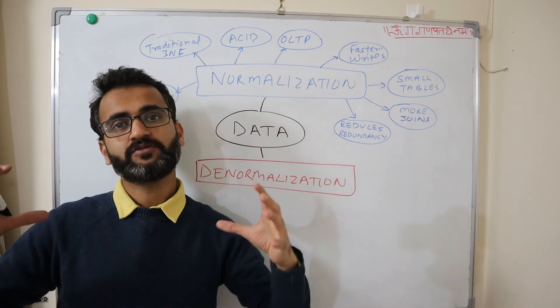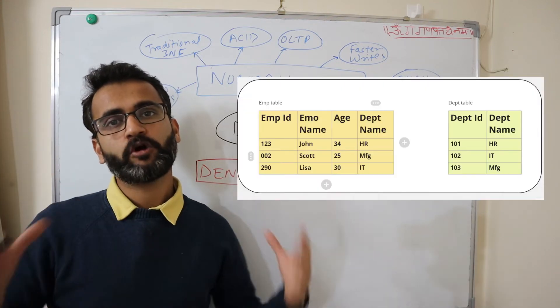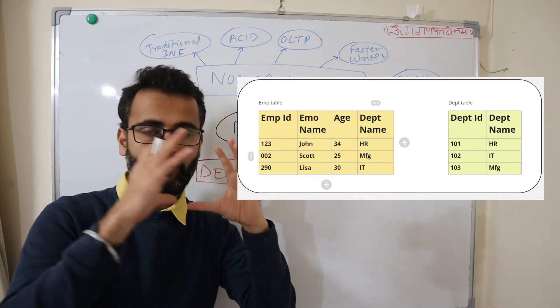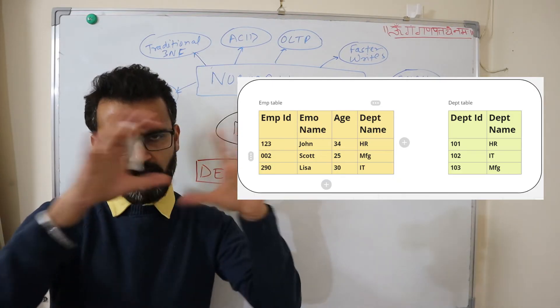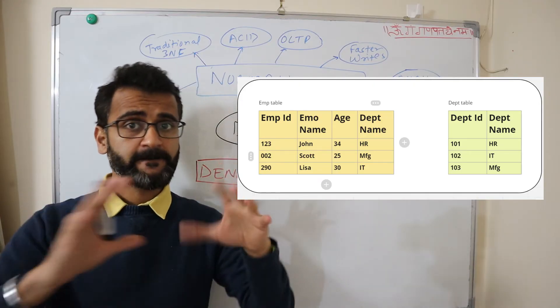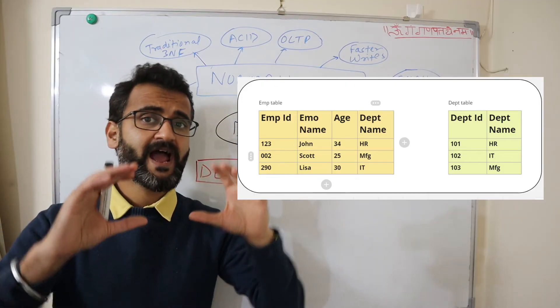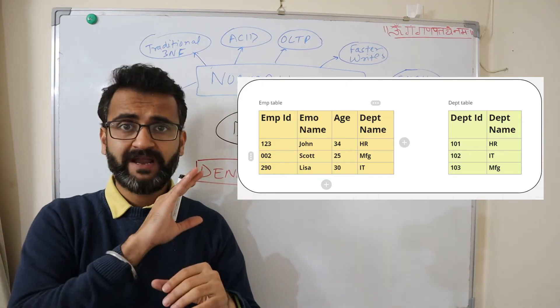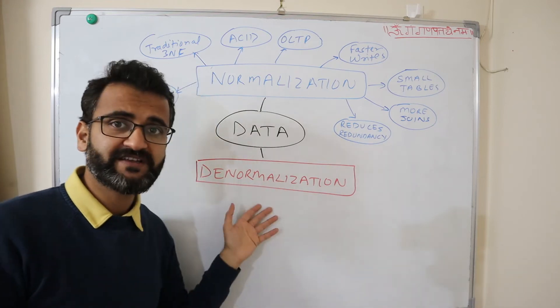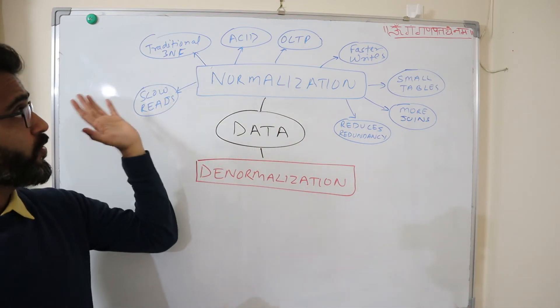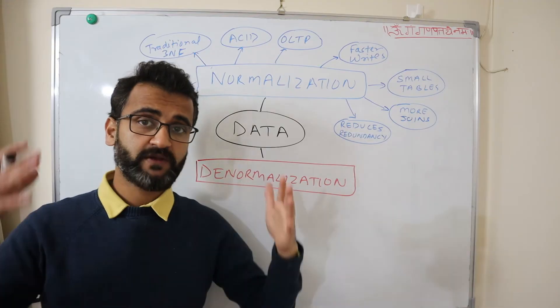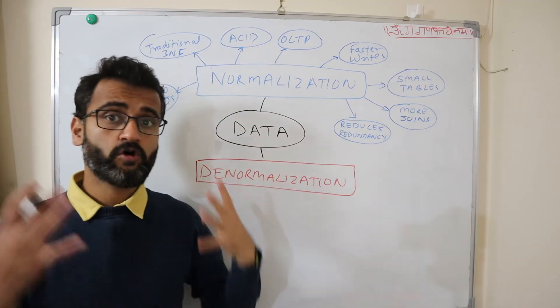What if instead of putting everything together, you bring the department name within the employee table. Then instead of running two different fetches from employee and department, you will have department name built inside the employee table. You can have your separate department table to run and add additional attributes for department, but your employee table will have that particular department name. So you can run the query exactly on that particular employee table. So that's where we denormalize the data. It is good for certain cases where you have write heavy applications where we have to focus on writing the data, then you need to have a normalized database.